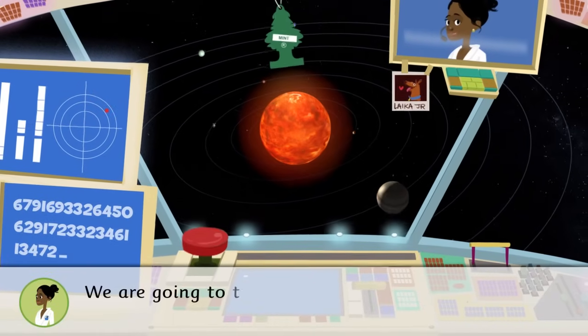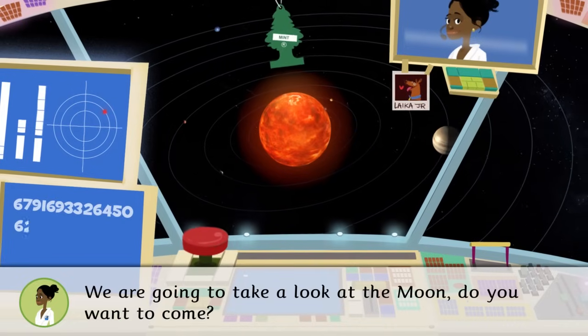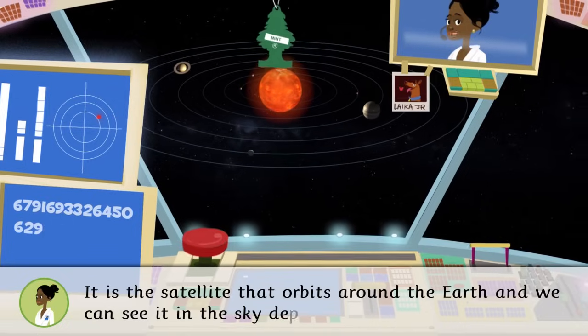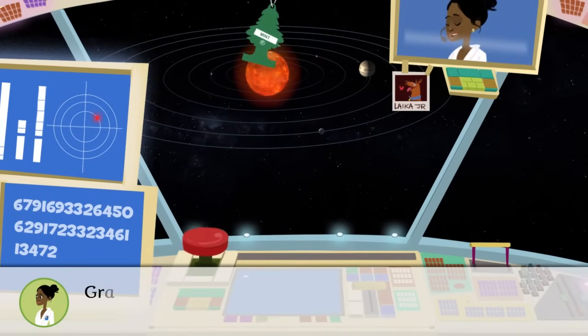You are looking at the solar system. We are going to take a look at the Moon. Do you want to come? It is a satellite that orbits around the Earth and we can see it in the sky depending on its phases. Grab on, we're headed that way.